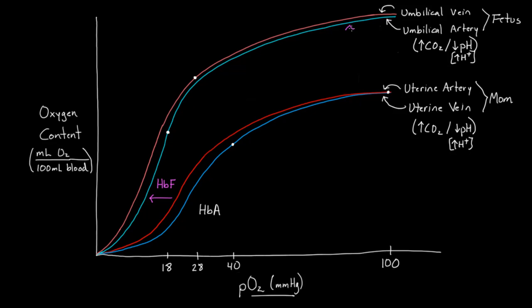The other big difference is that the fetal curves are much higher than mom's curves overall, meaning there's more total oxygen content. This is because the baby has a higher hematocrit — around 55% compared to mom's roughly 35%. A higher hematocrit means more hemoglobin inside all those red blood cells, and hemoglobin concentration is one of the key factors in calculating oxygen content.